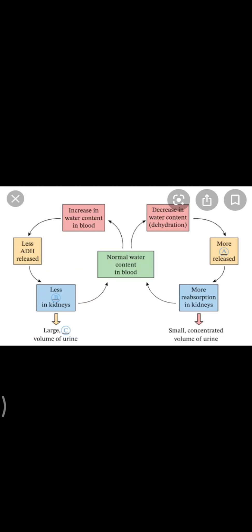The hypothalamus signals the release of vasopressin or ADH — antidiuretic hormone — which acts on renal tubules to bring about reabsorption of water. When an individual drinks much water, blood volume increases, which stimulates the osmoreceptors. They send a message to the pituitary gland, which stops the release of ADH or vasopressin.